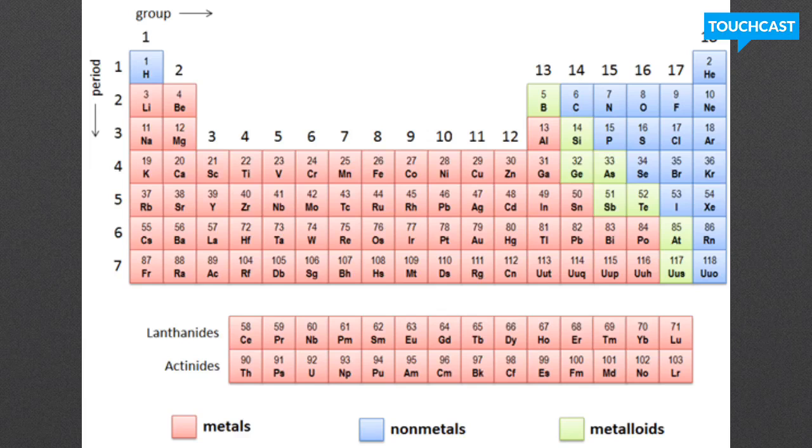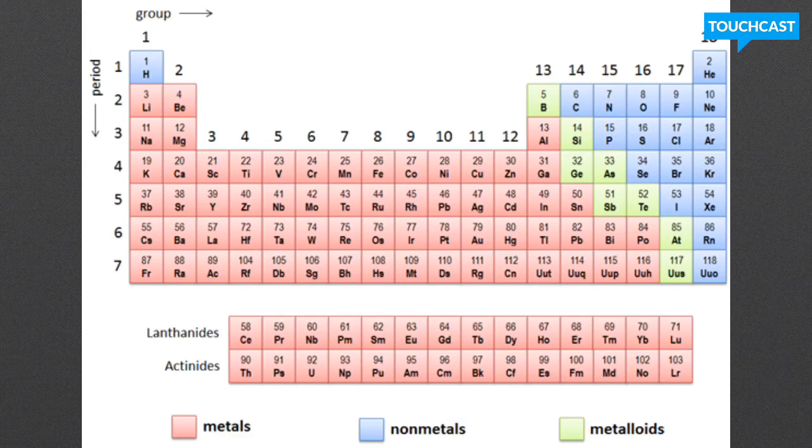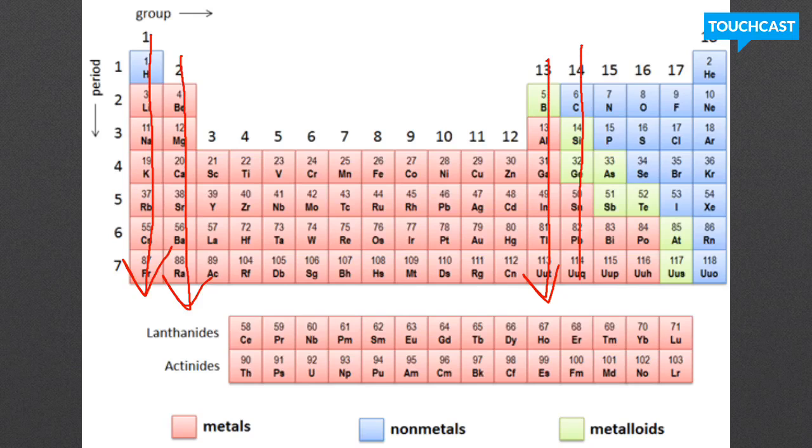So to recap, you should have learned that the periodic table is arranged in periods. As you go across the periodic table, that tells you the number of orbitals there are in the elements. The periodic table is also arranged by groups. As you go down the groups, it tells you the number of valence electrons in that column. Groups all have the same properties.